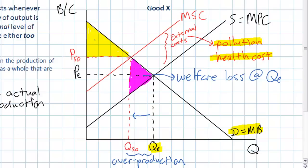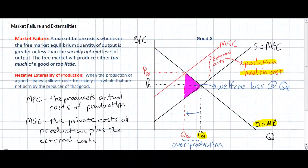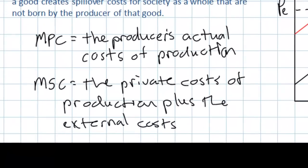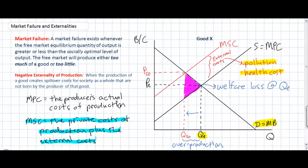Society would be better off with less of this good. To review: the private cost of production for good x is lower than it would be if it were to incorporate all of the external costs, including pollution and higher health care costs of workers. Therefore, marginal social cost equals the private costs of production plus the external costs borne by society as a whole. If producers of good x were to bear the external costs themselves, then the quantity produced would be lower — equal to QSO rather than QE — and society as a whole would be better off by an amount represented by the purple triangle.